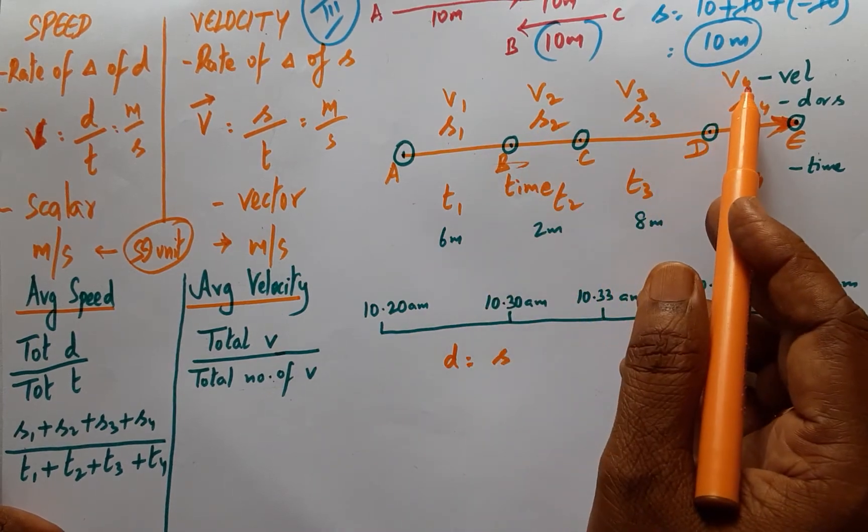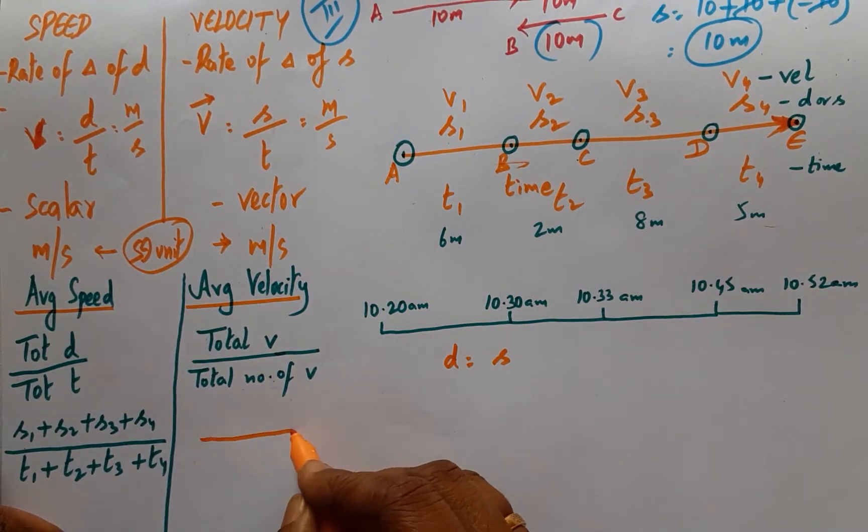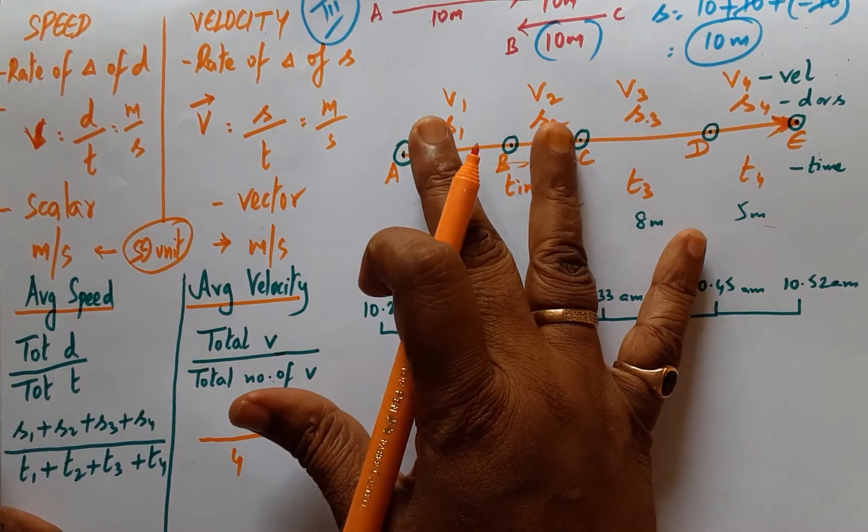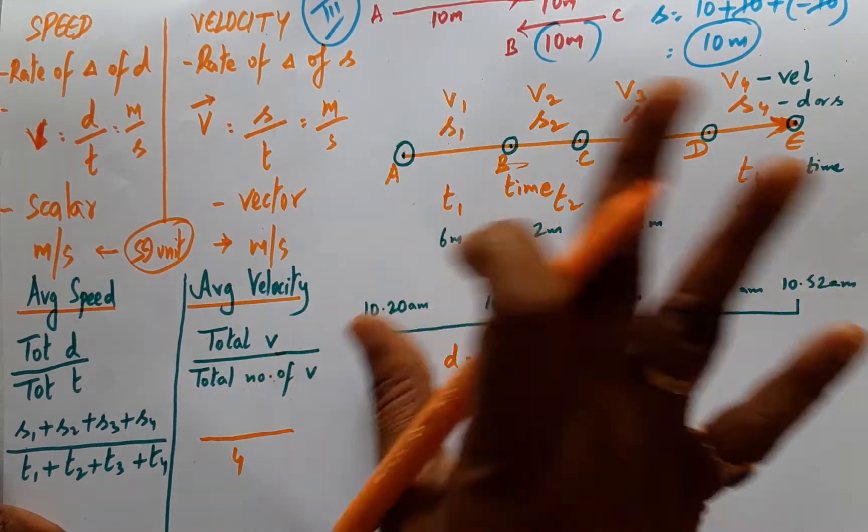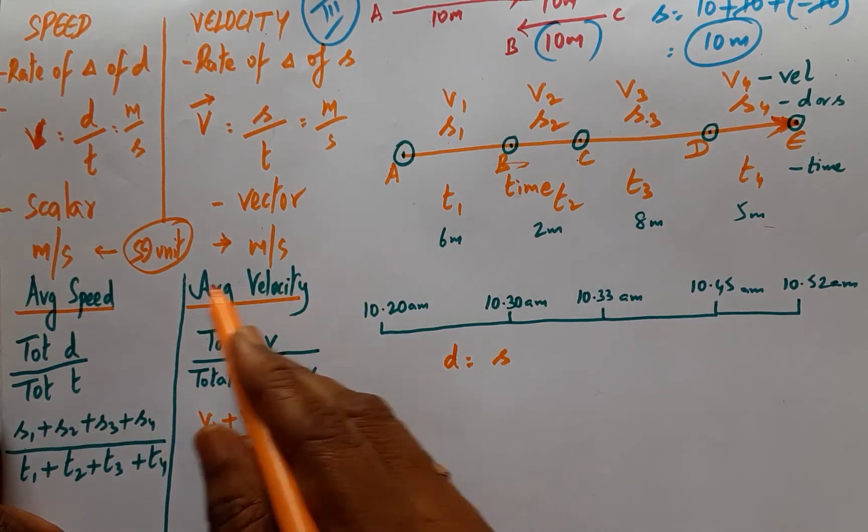Whereas here it would be V1 plus V2 plus V3 plus V4, and total number of velocities are 4, therefore it would be divided by 4. If there are only 2 velocities, it would be V1 plus V2 by 2. So that is the difference between average velocity and average speed.